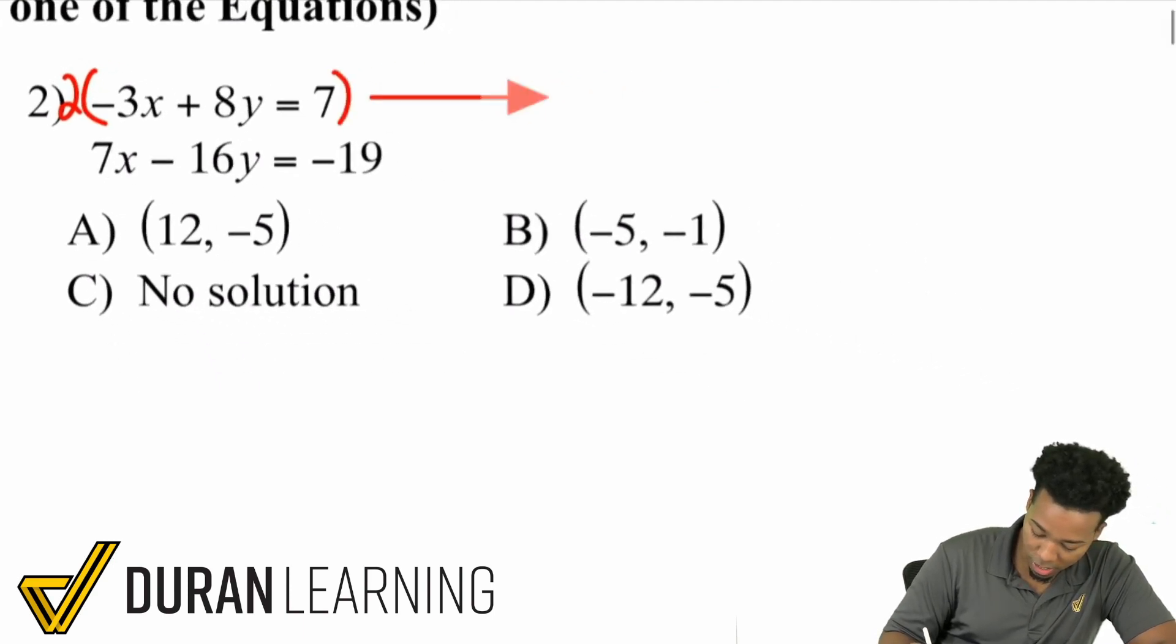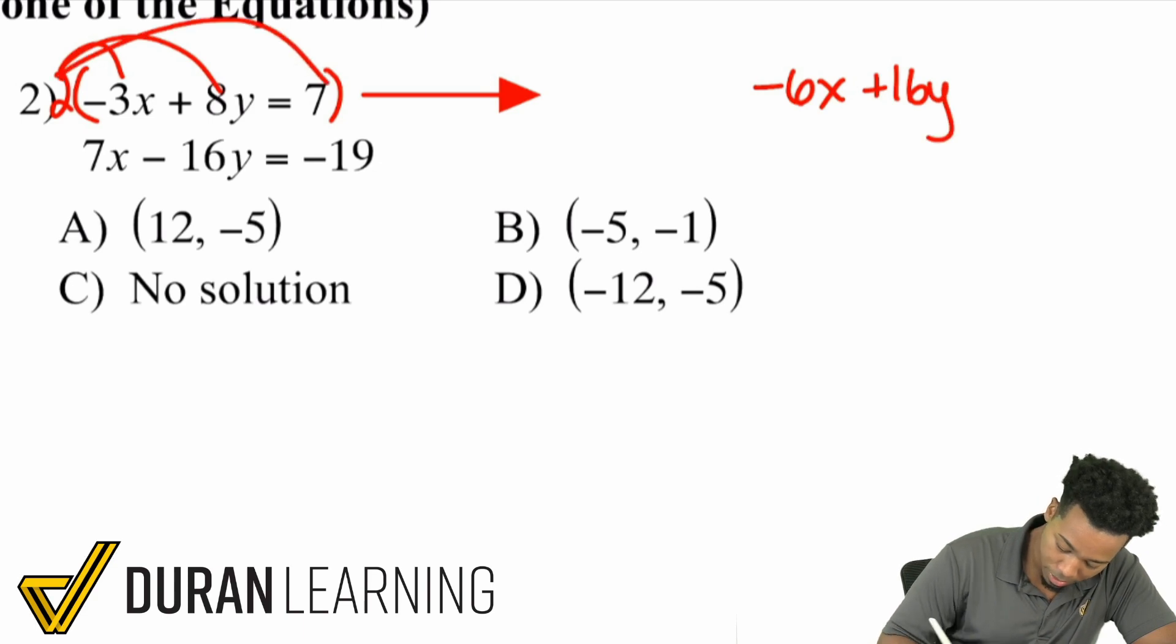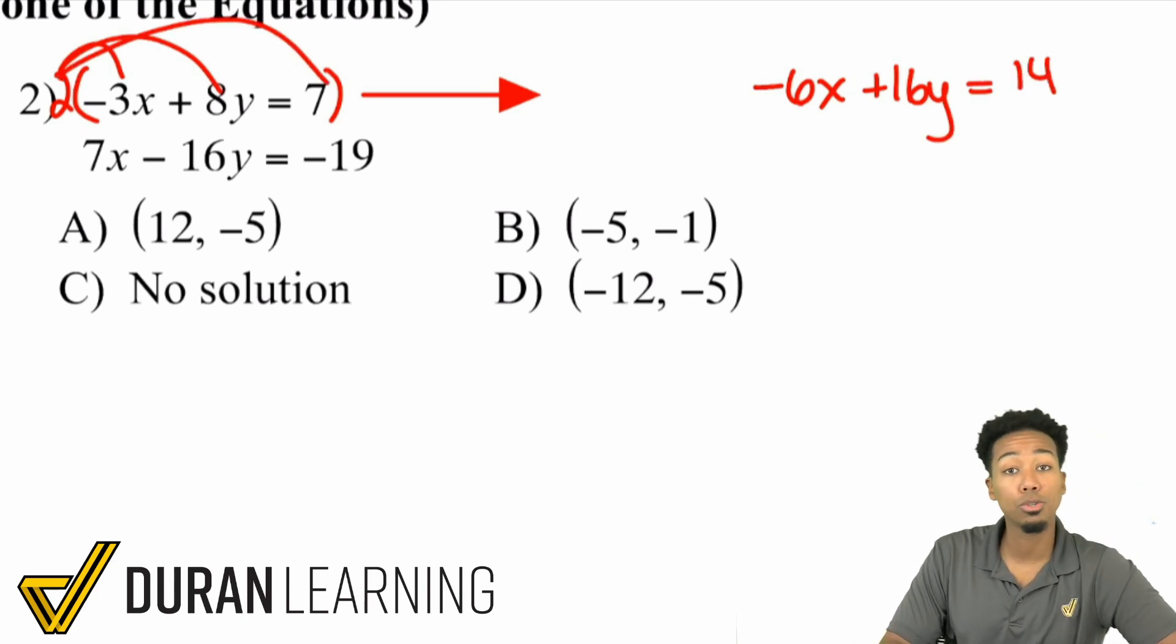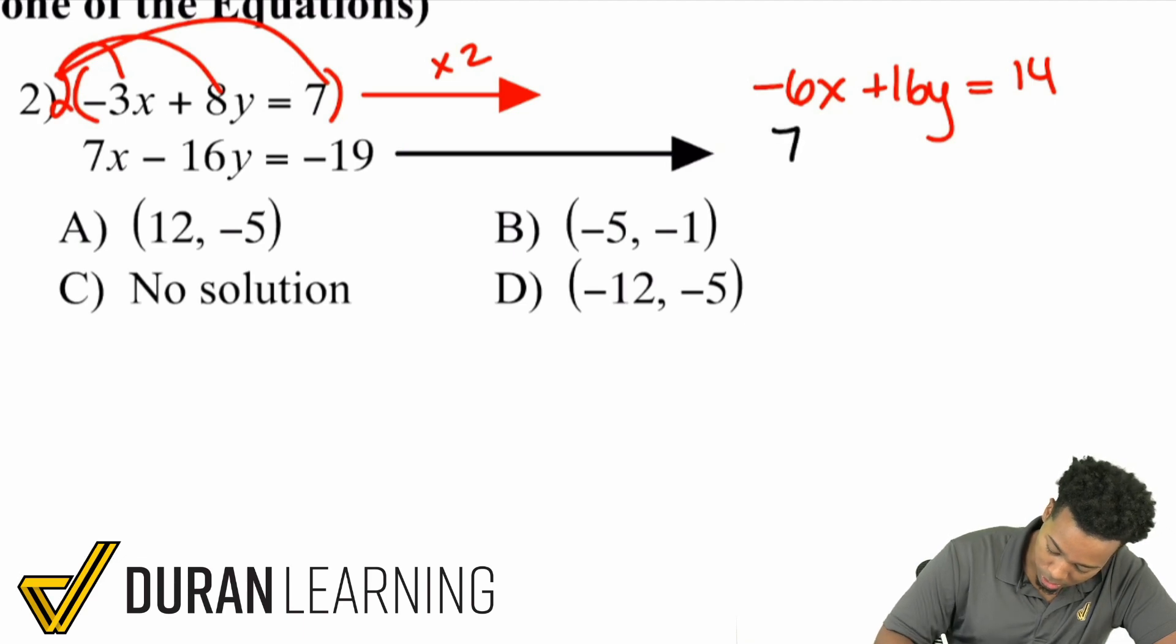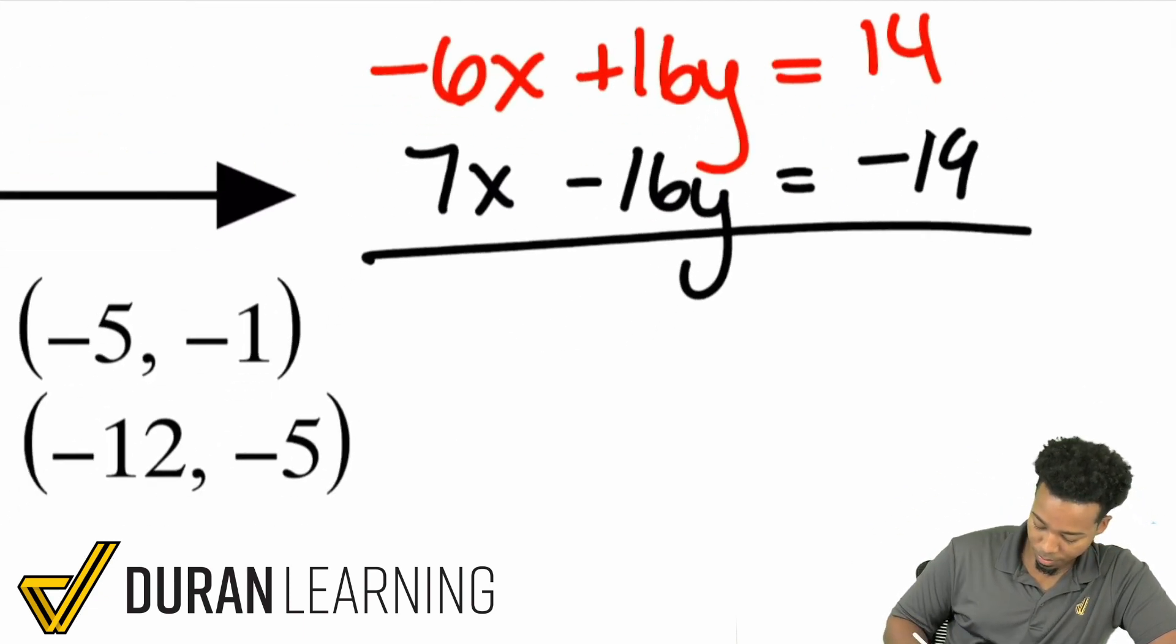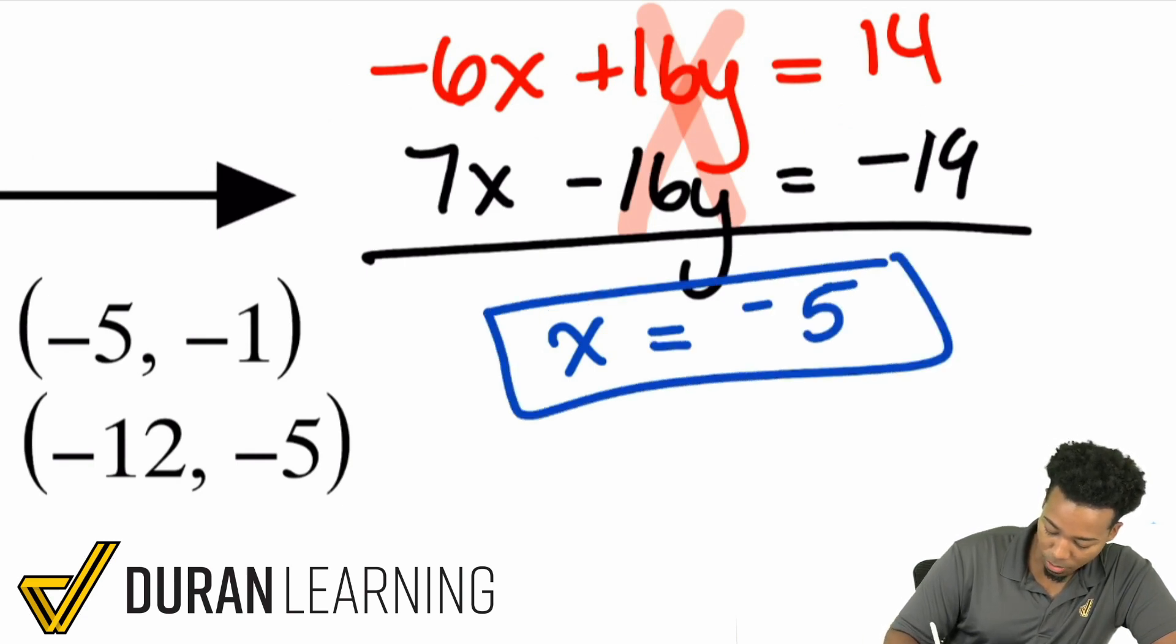What I'll receive my math party people is negative 6x plus 16y equals 14. I multiplied everything by 2. I'll rewrite the second equation as it was, 7x minus 16y equals negative 19. It eliminates right there exactly like we wanted it to. Negative 6x plus 7x gives me x, 14 minus 19 is negative 5, and we have x equals negative 5.